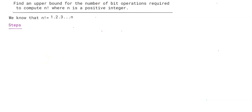Today let us find an upper bound for the number of bit operations required to compute n factorial, where n is a positive integer. We know that n factorial is the product 1 × 2 × ... × n, that is, the product of the first n positive integers.